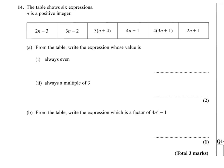Question 14. From these expressions we need to write down an expression which is always even. When you look around, you can notice that 4(3n+1) is in the 4 times table, and any number which is in the 4 times table is an even number. So this expression will always be even for n being a positive integer.